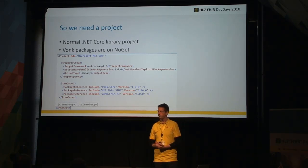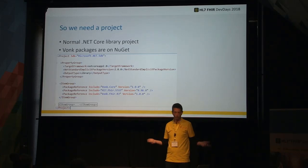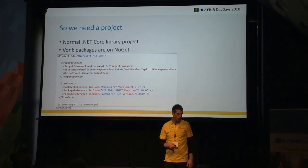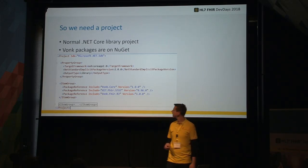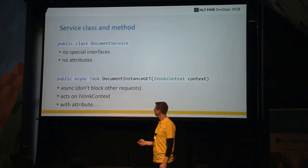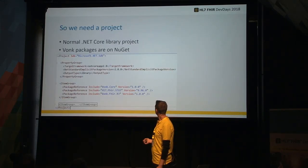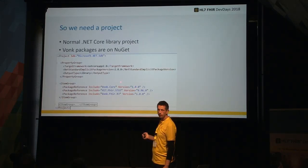First, you need a project to build this in — it's just a normal .NET Core library project: File, New, Project, Library. The VONC packages you use for it are on NuGet for download, so you can just add them as normal NuGet packages.